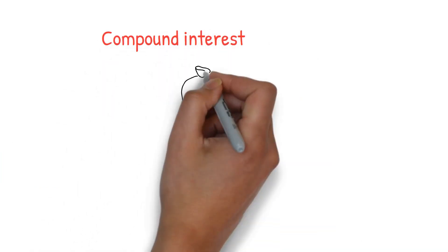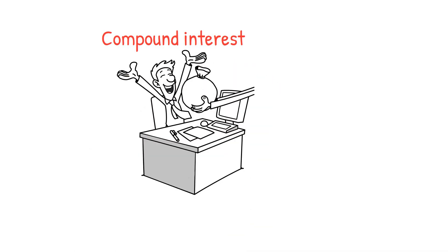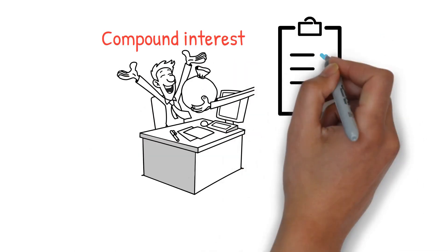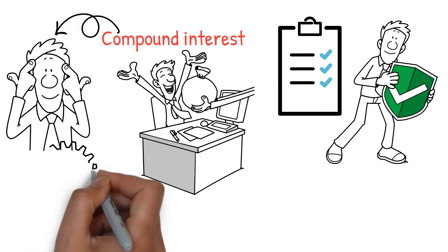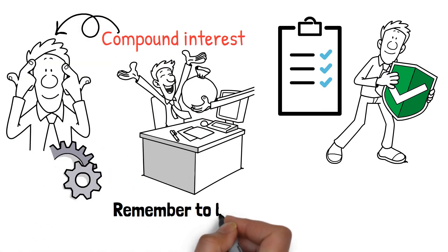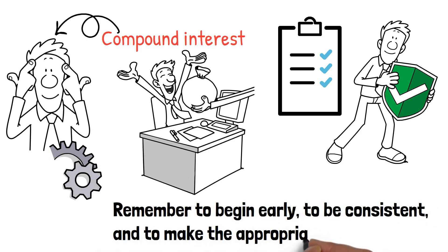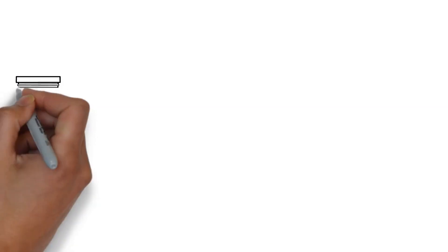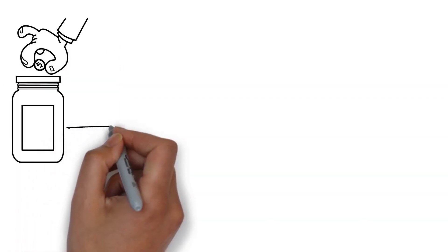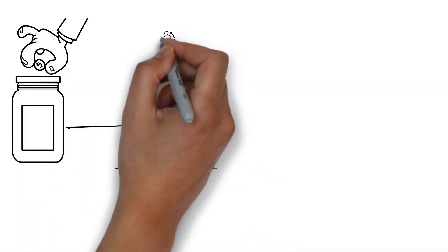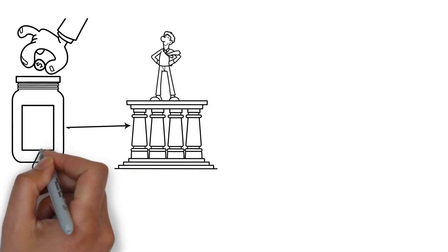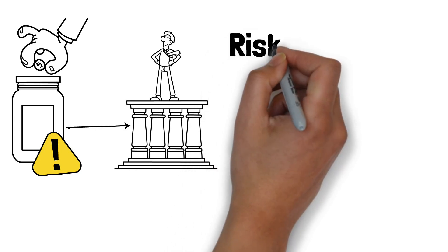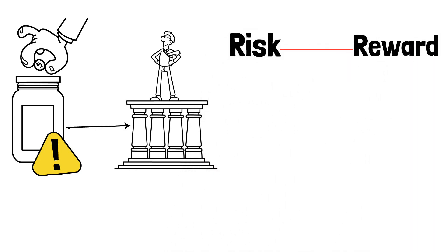Compound interest is a vital instrument for growing your wealth over time. You may achieve your financial objectives and build a more secure future by understanding how it works and making it work for you. Remember to begin early, to be consistent, and to make the appropriate investment. Investing your money to take advantage of the power of compounding interest is a wise financial approach that can help you achieve your financial goals over time. Yet it's vital to remember that all investments involve some level of risk. It would be best to strike a risk-reward balance corresponding to your investing goals, time horizon, and risk tolerance.